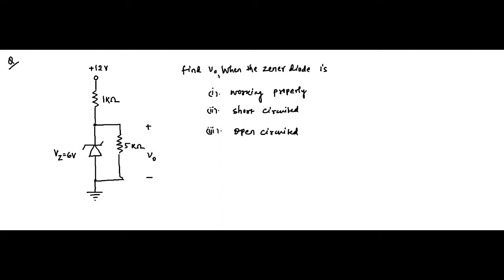Here we have another question on zener diode circuits — a very simple and straightforward one. We are asked to find the output voltage across a 5 kilo ohm resistance. The zener diode has a breakdown voltage of 6 volt. We need to analyze it when it is working properly, when it is short circuited, and when it is open circuit. The zener diode has its anode connected to positive 12 volt and cathode connected to ground.